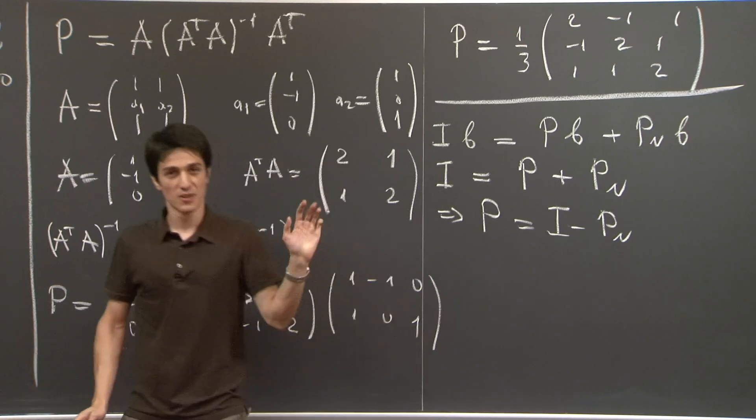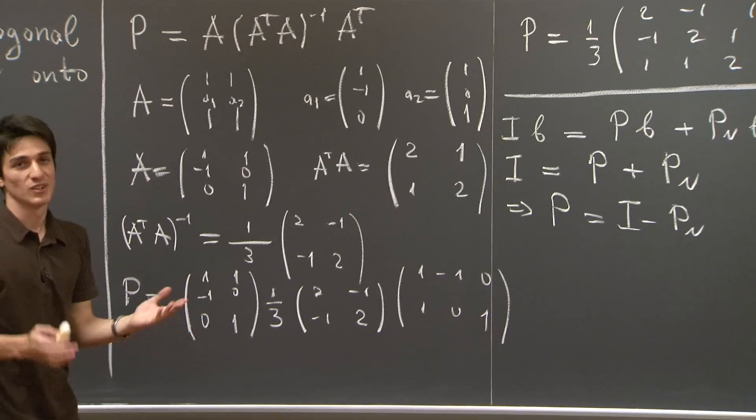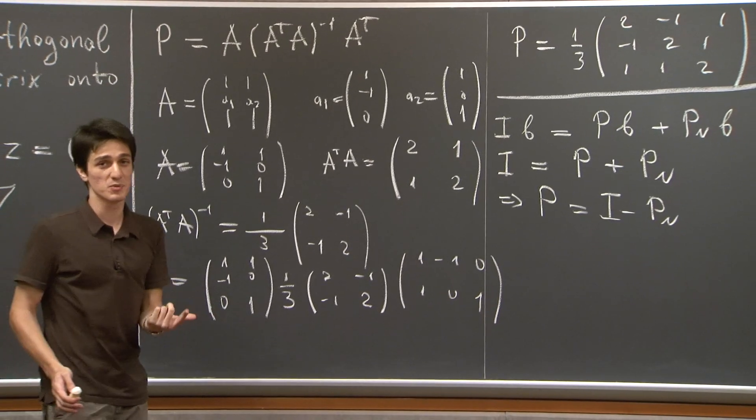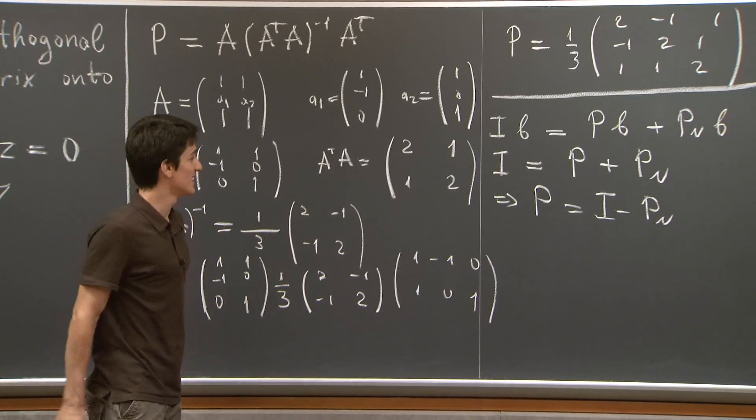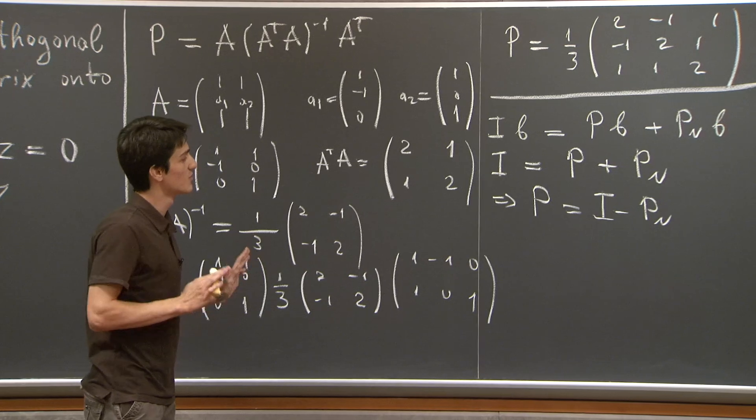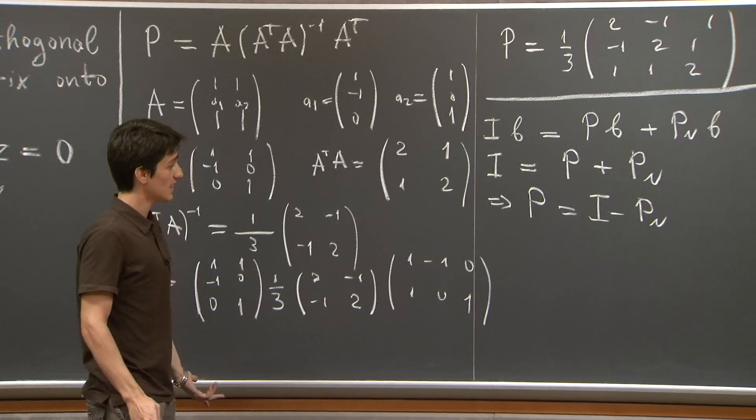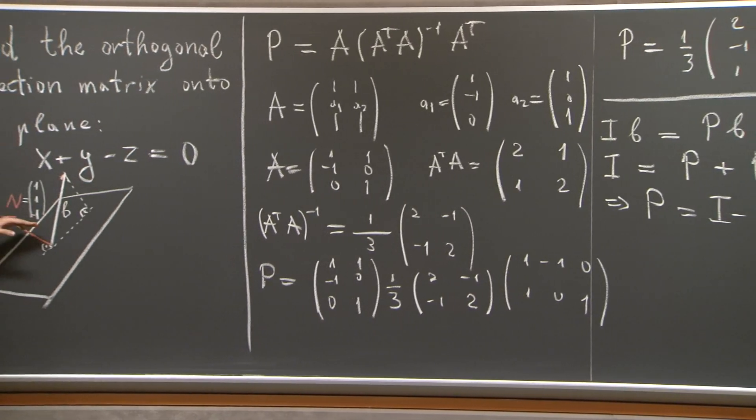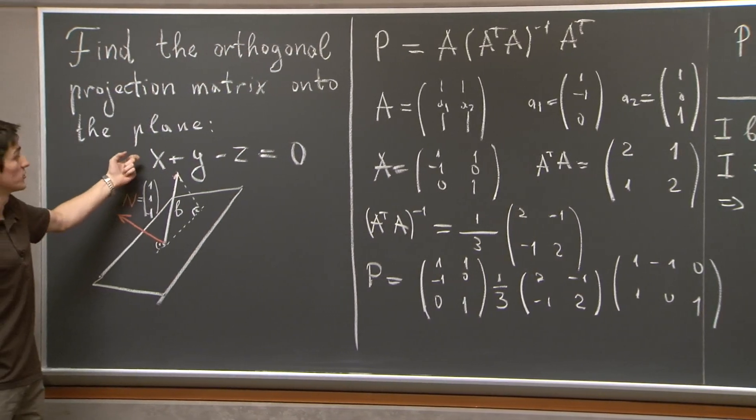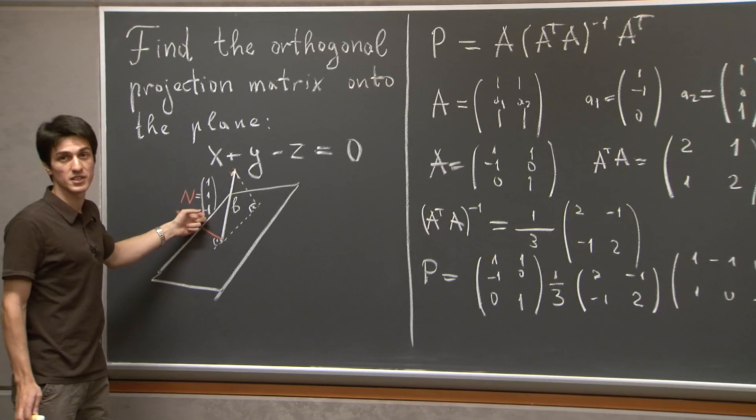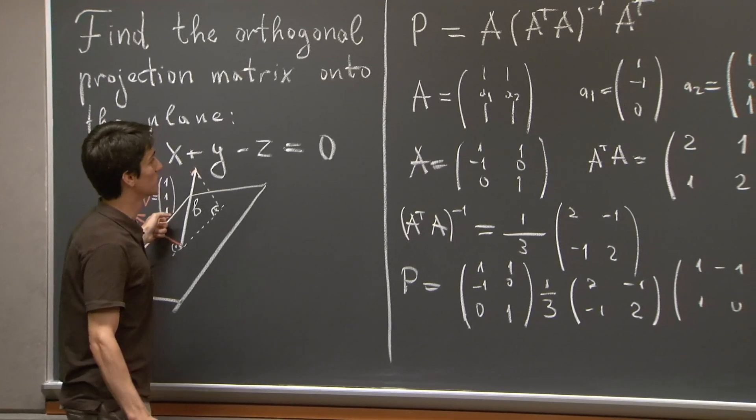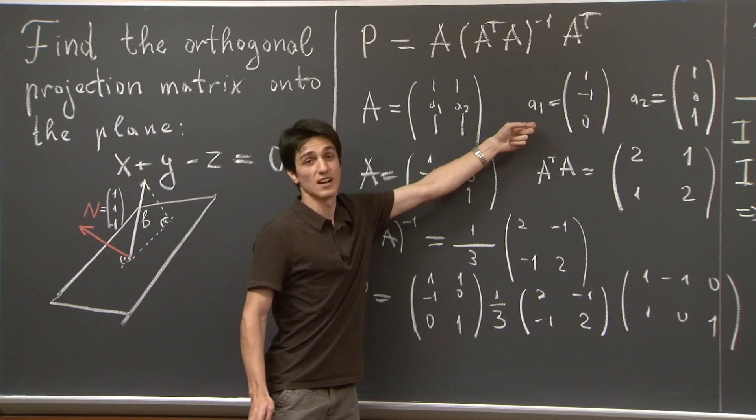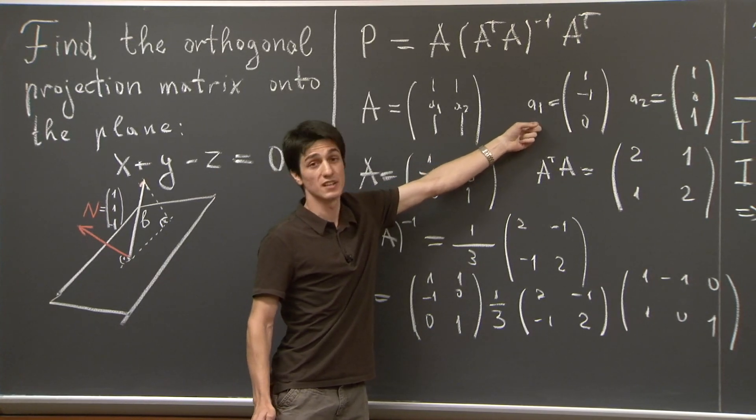Now, this object here, PN, is much easier to compute. Well, for two reasons. First one is that, projecting onto a one-dimensional subspace is infinitely easier than projecting onto a higher dimensional subspace. And second, we already have, immediately, we can read off from the equation of the plane what the normal vector is. So we don't have to derive these guys. Like, we don't have to do what we did here.